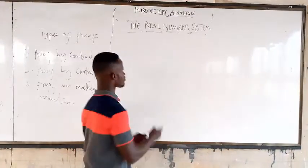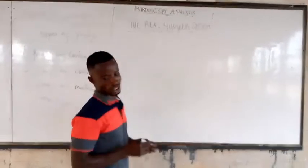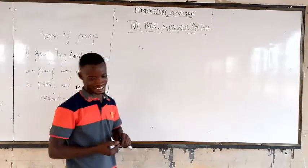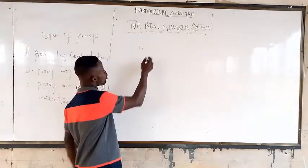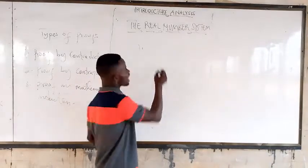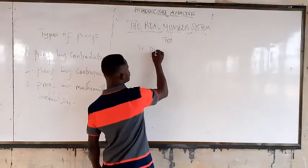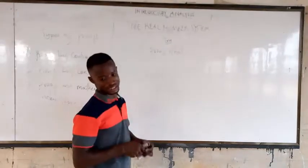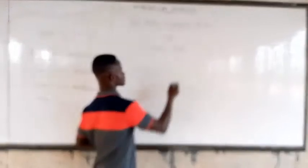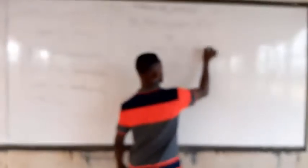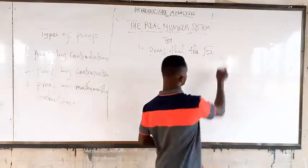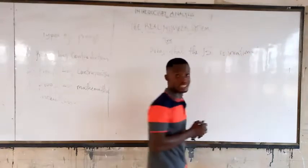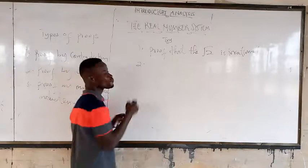This is just an introduction to the course of introductory analysis. The first assignment I'm giving you to go and try: prove that the square root of 2 is irrational. We know it's irrational, but we want you to prove it.